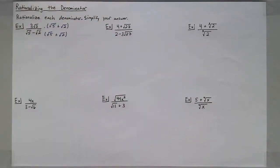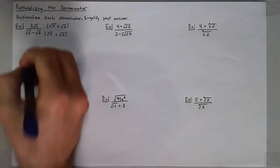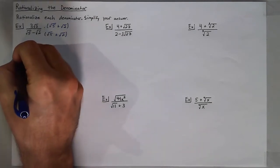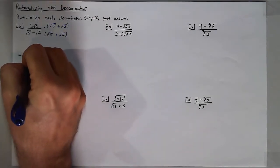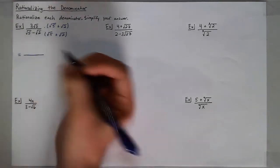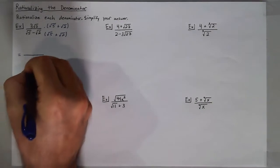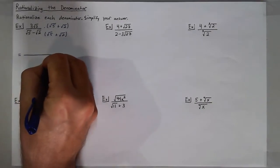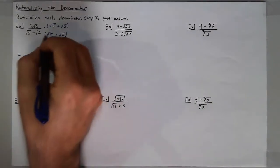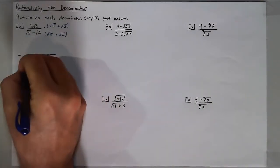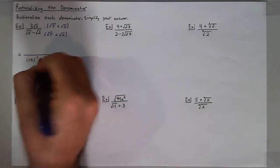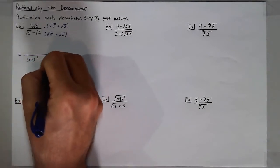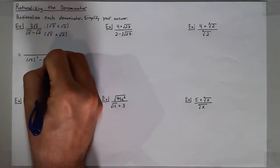By doing this, my denominator, when multiplied, is now a difference of squares. So I will have the square root of 5 squared minus the square root of 2 squared.